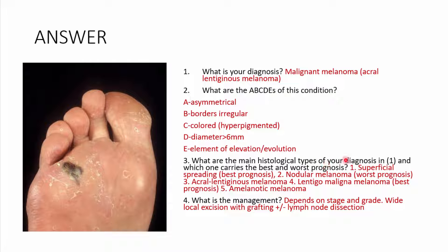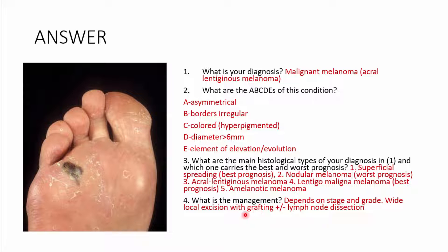For histological types and prognosis: superficial spreading carries the best prognosis, though some literature also suggests lentigo maligna melanoma carries the best prognosis. Nodular melanoma carries the worst prognosis. Other types include acral lentiginous melanoma and amelanotic melanoma — five main types in total. Management depends on stage and grade of the tumor, but generally you perform a wide local excision with a graft, plus or minus lymph node dissection.